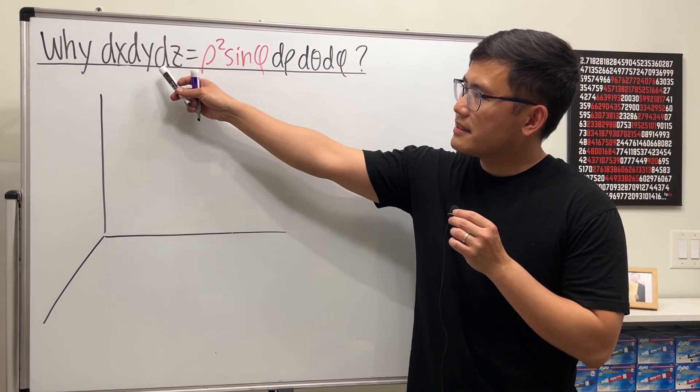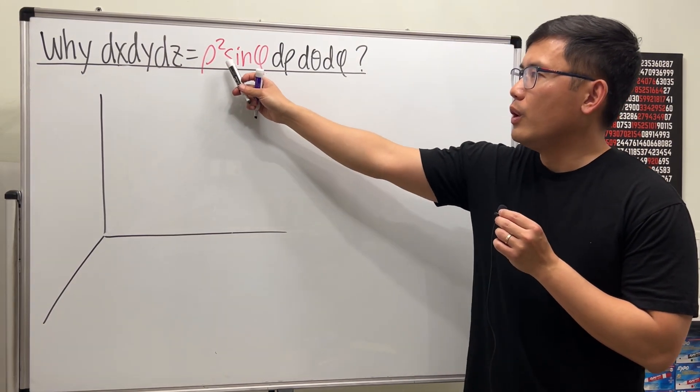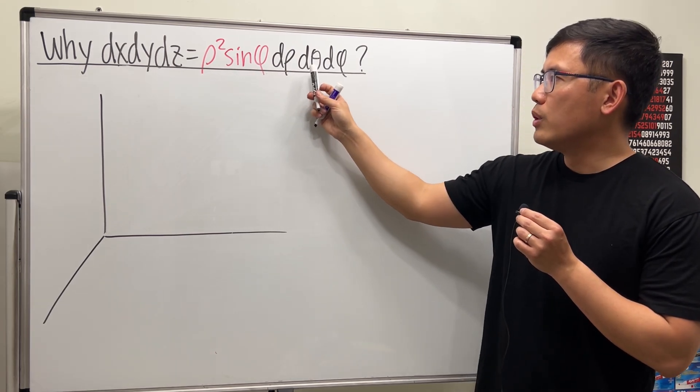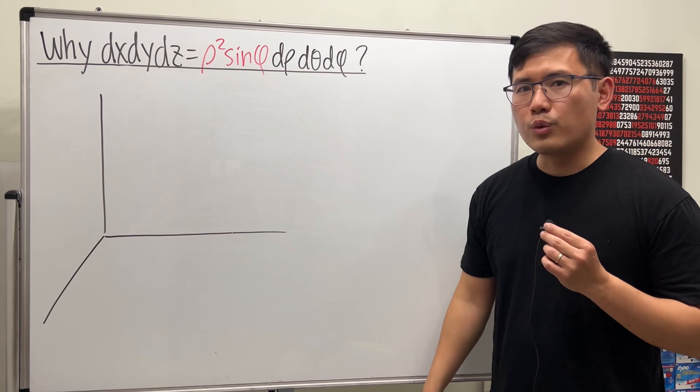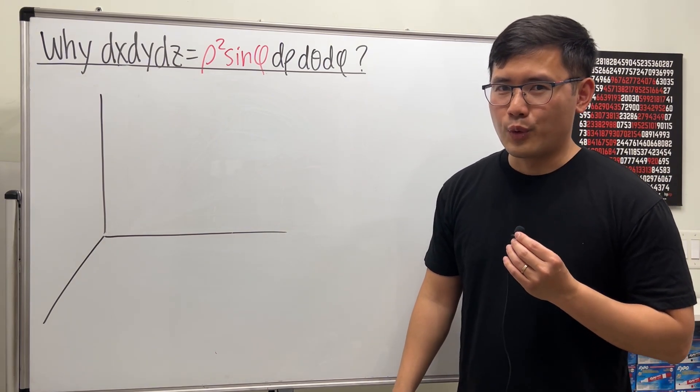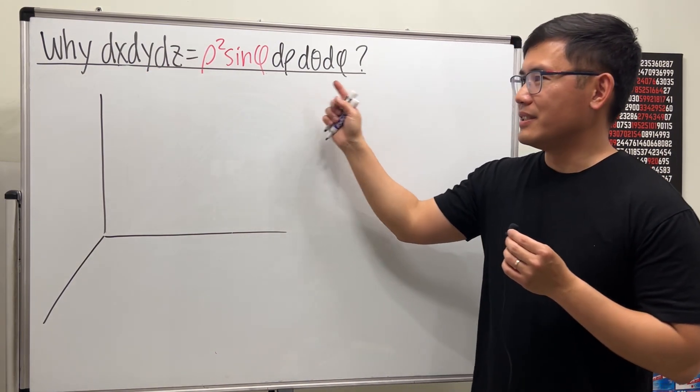Let's talk about why dx dy dz is equal to rho squared sin phi d rho d theta d phi. We do this whenever we have a triple integral that requires change of coordinates, going from rectangular to spherical.